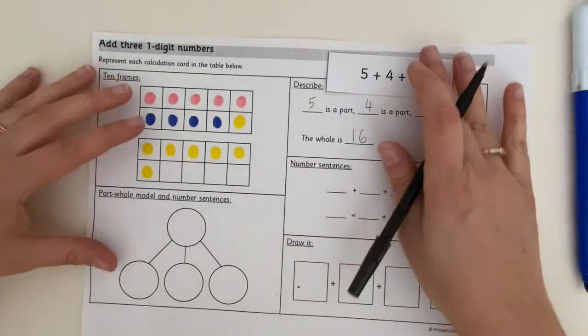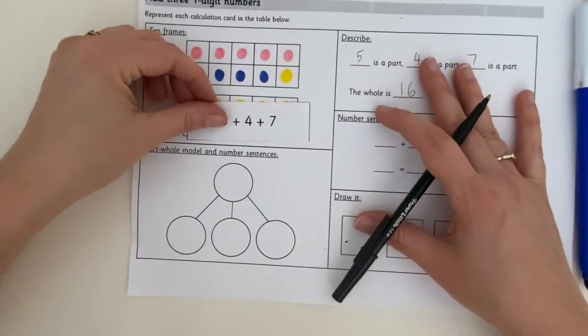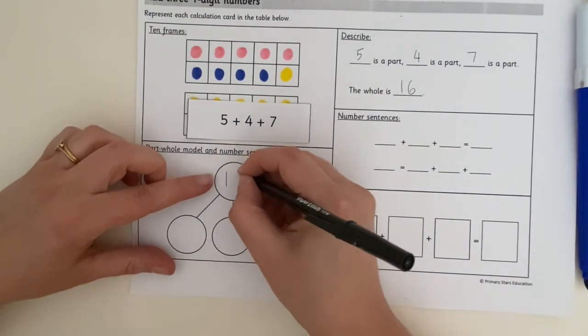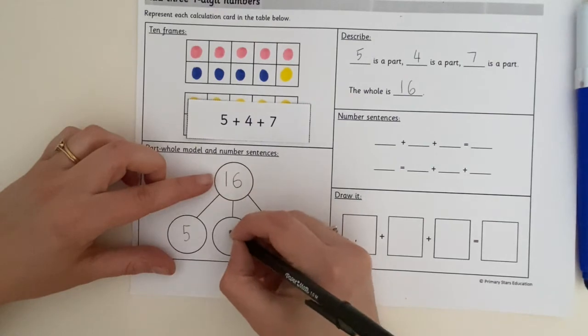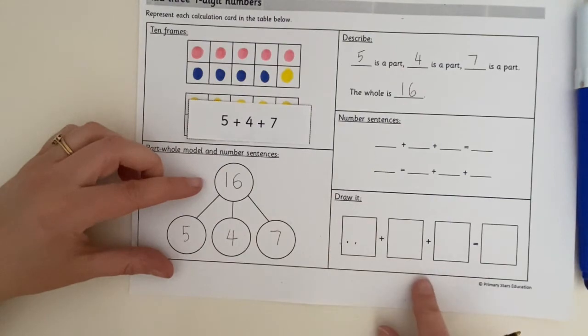We can show that in a different way here in the part-whole model. We know, don't we, our total is 16. We're going to put that in the middle here. And we know that 5 add 4 add 7, when we put those numbers all together, they go together to make 16.